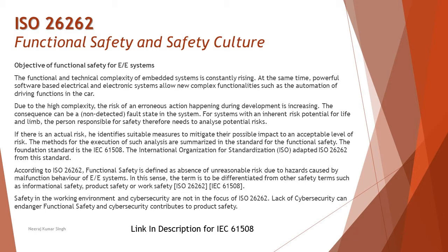When you talk about the risk areas which we generally identify, risk needs to be mitigated as much as possible. But if there are things which cannot be mitigated, you need to try to reduce them as much as possible so that the particular risk does not happen. If there is an actual risk, one identifies suitable measures to mitigate their possible impact to an acceptable level of risk. The methods for executing such analysis are summarized in the standard of functional safety.